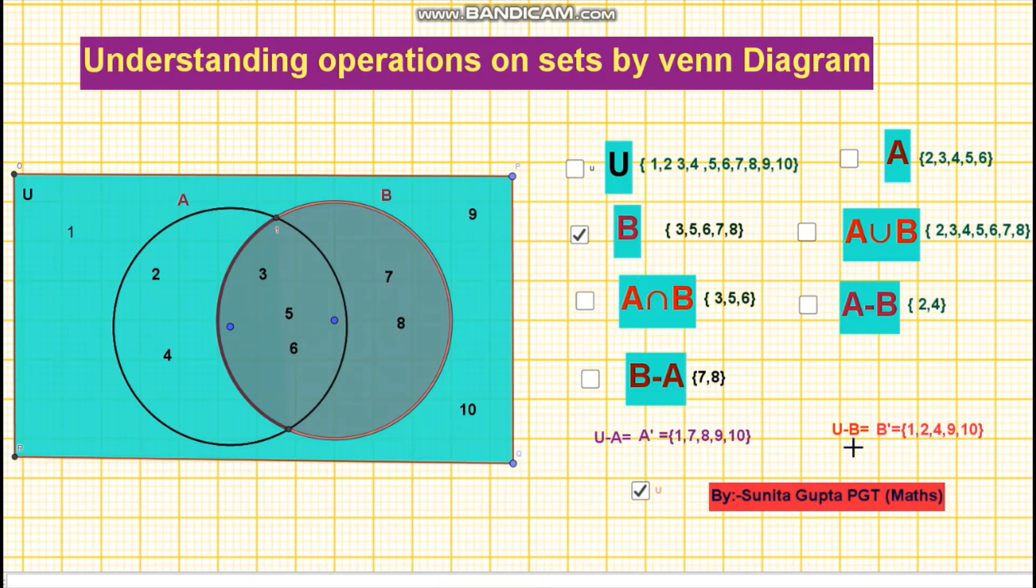Complement of set B is represented by U minus B.